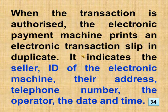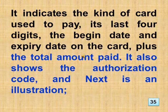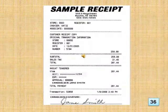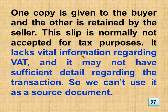When the transaction is authorized, the electronic payment machine prints an electronic transaction slip and duplicate. It indicates the seller, the ID of the electronic machine, their address, telephone number, the operator, the date and time. It indicates the kind of card used to pay, its last four digits, the begin date and expiry date on the card, plus the total amount paid. It also shows the authorization code. This slide shows an electronic transaction slip. One copy is given to the buyer and the other is retained by the seller. This slip is normally not accepted for tax purposes — it lacks vital information and may not have sufficient detail regarding the transaction, so we can't use it as a source document.